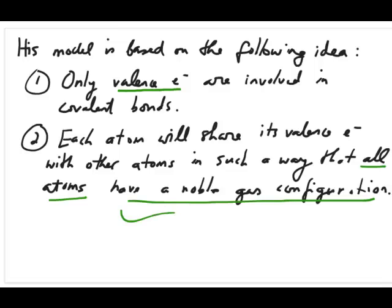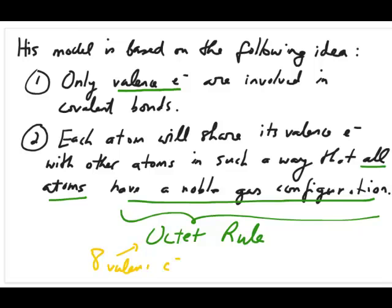This is most often known as the octet rule, and the word octet stands for 8. The reason for that is because when you look at noble gases, they tend to have 8 valence electrons. As a result, the octet rule is developed because the idea is every atom in a molecule would want to have 8 valence electrons.